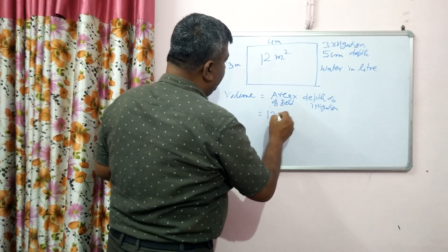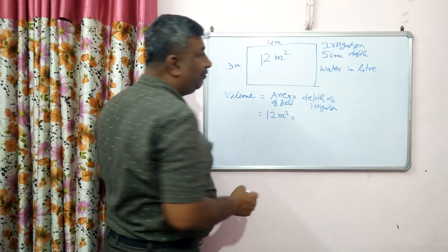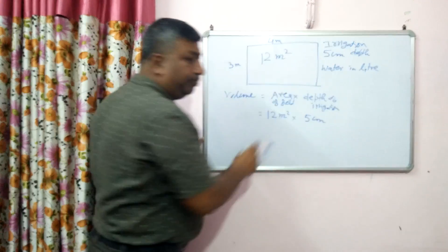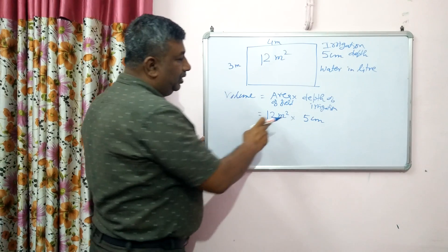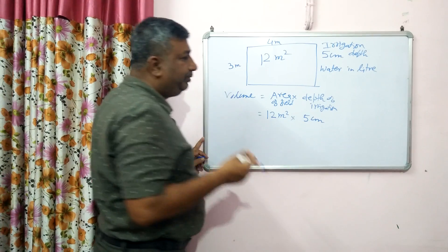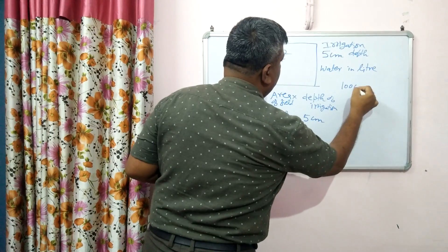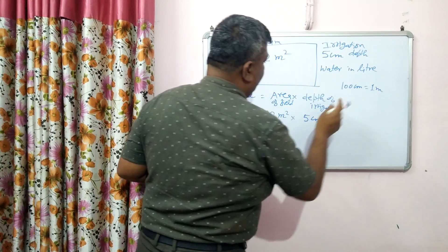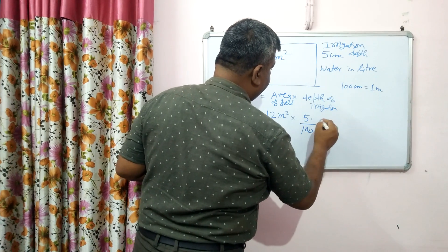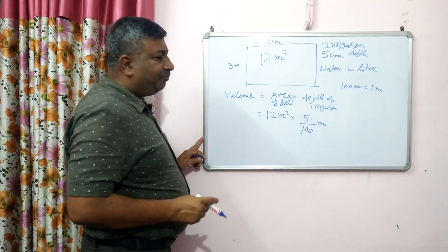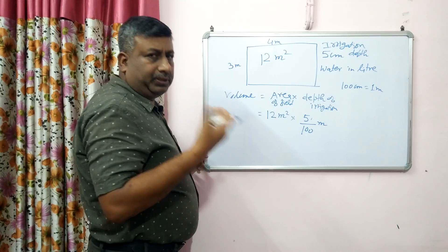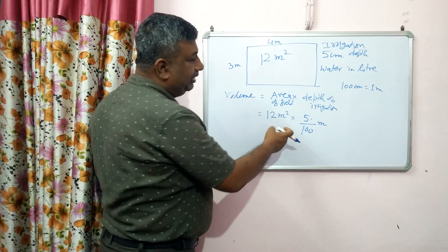Area of field is 12 square meter and depth of irrigation is 5 centimeter. Both the units should be the same — like terms. The area is in meter and depth is in centimeter, that is why it is converted into meter. We know that 100 centimeter is equal to 1 meter, so to convert 5 centimeter into meter it is divided by 100. If depth is given in millimeter, then it is divided by 1000; if given in centimeter, then divided by 100.